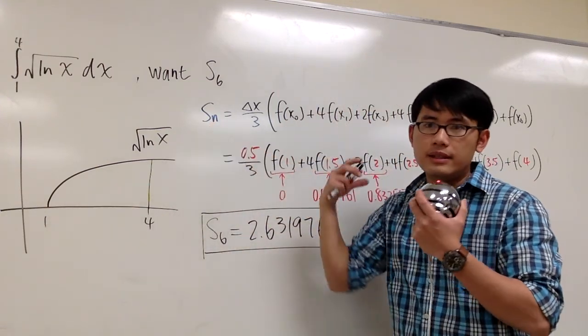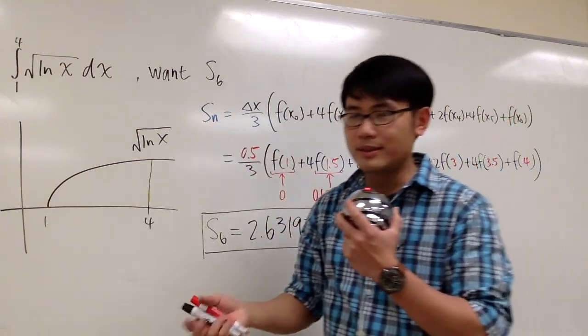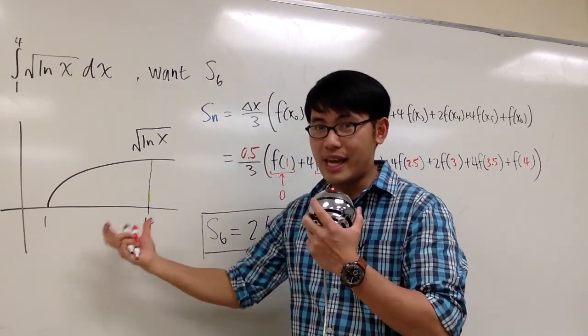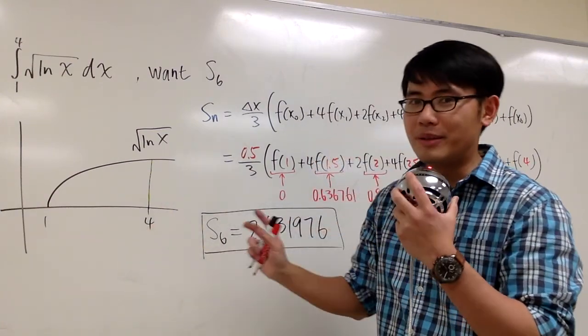And for Sn, the idea is that we are going to use parabolas to approximate the area. It's kind of hard to draw, so I may not do that.